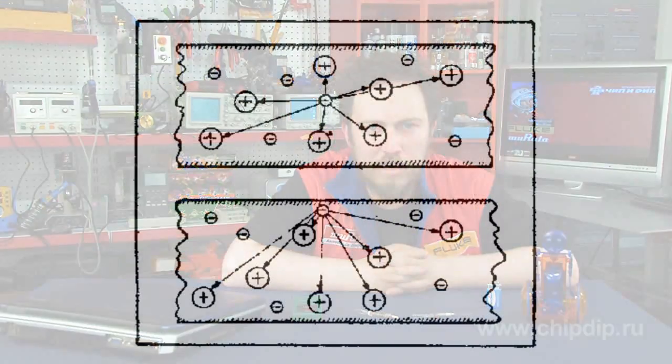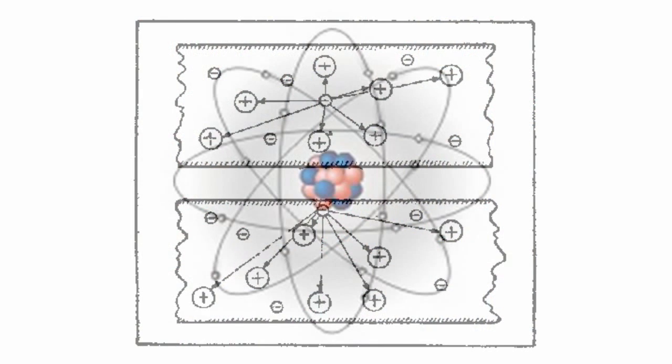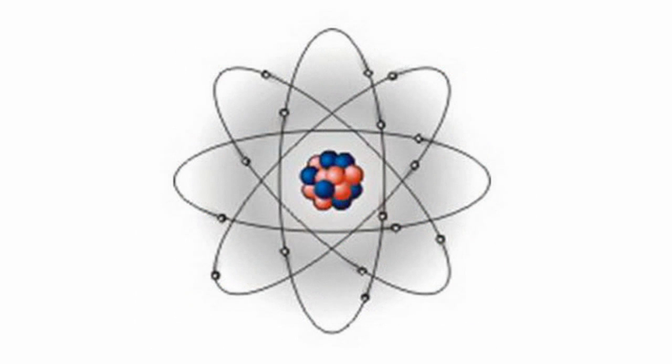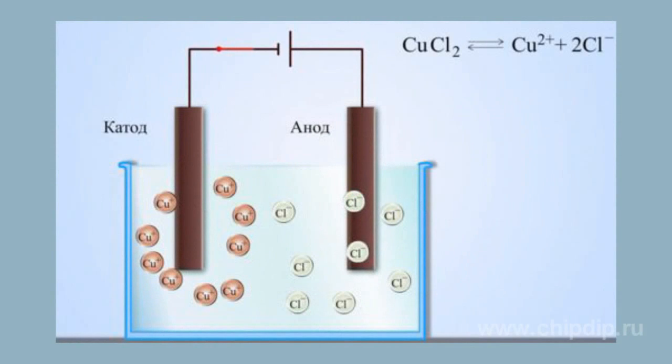Orderly movement of ions is also an electric current, but not all ions can move freely. Even a small electron is hard to wade through the thicket of atoms and molecules of a solid matter, and the diameter of an ion is almost a million times bigger. On the contrary, in liquid conductors, the electric current is produced mainly by the motion of ions. Negative ions move to the positive pole, and positive ions to the negative one.